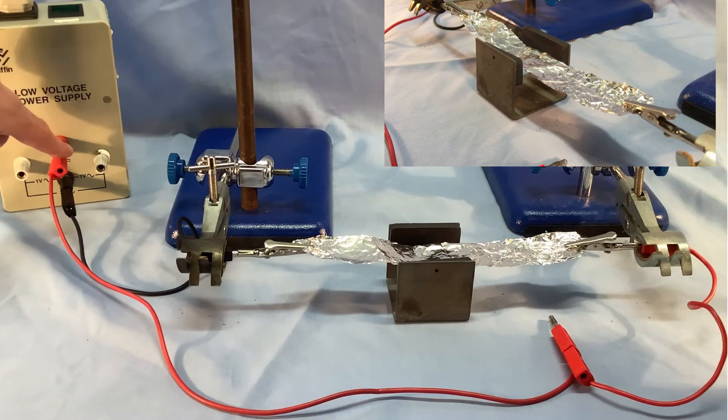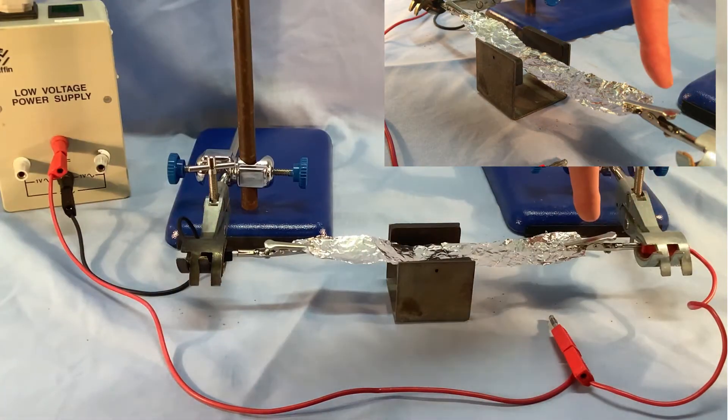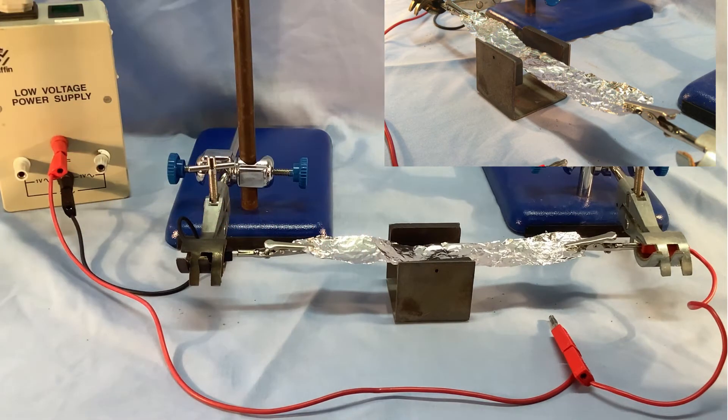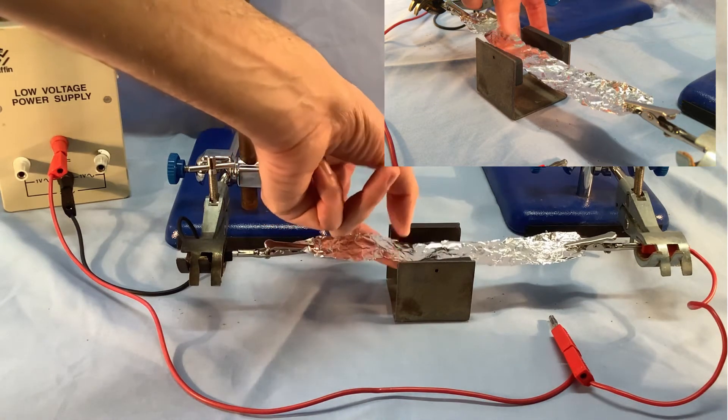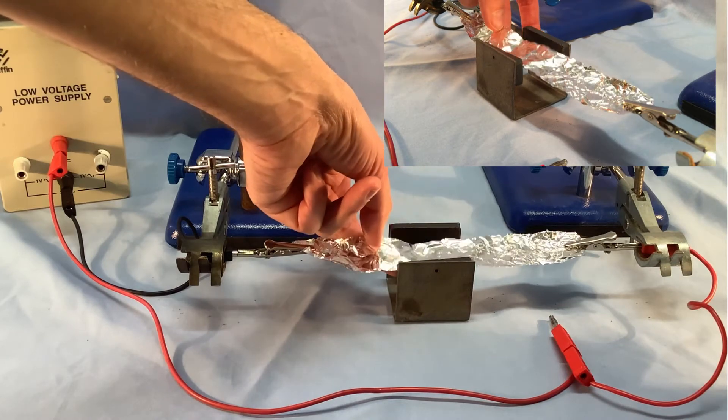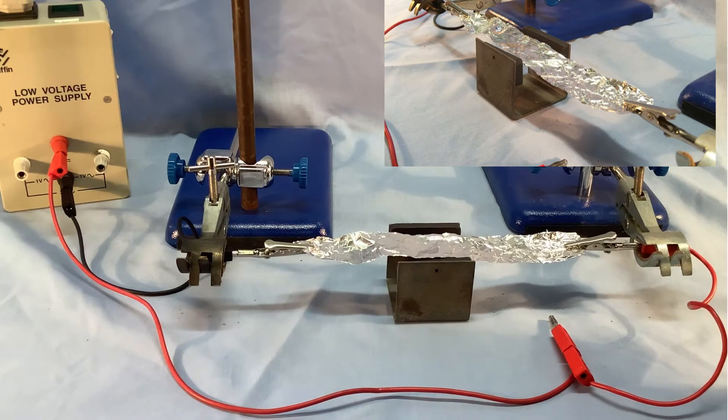which is low voltage, high current. It goes from there around to this piece of aluminum foil and back to the power supply. At the moment that's switched off, and you can see that this bit of aluminum foil is not too tight, so it's able to move up and down a bit if it experiences a force.